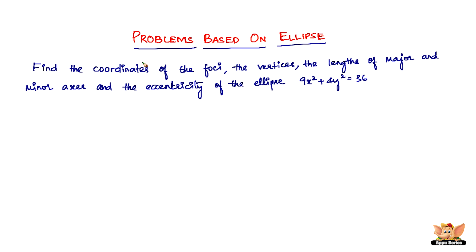In this video, let us continue to solve more problems based on ellipse. Here we've got a problem which reads: find the coordinates of the foci, the vertices, the lengths of major and minor axis, and the eccentricity of the ellipse 9x² + 4y² = 36.